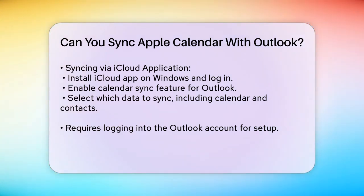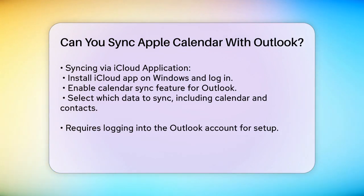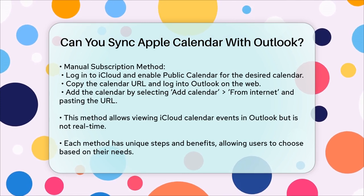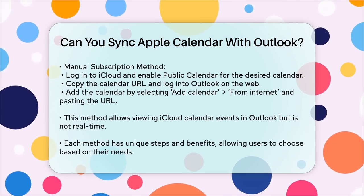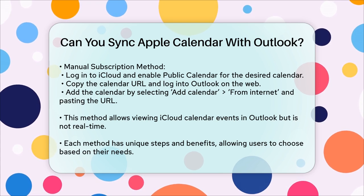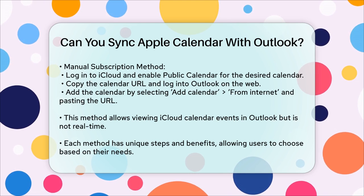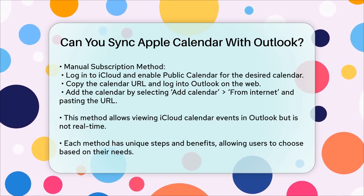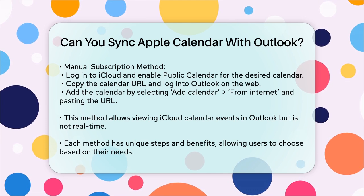The manual subscription method: if you prefer a more manual approach, you can subscribe to your iCloud calendar in Outlook. Log in to your iCloud account, go to the Calendar section, and enable the Public Calendar feature for the calendar you want to sync. Copy the calendar URL, then log in to your Outlook account on the web. Add the calendar by selecting Add Calendar from Internet and paste the URL. This will allow you to view your iCloud calendar events in Outlook, although it's not a real-time sync.